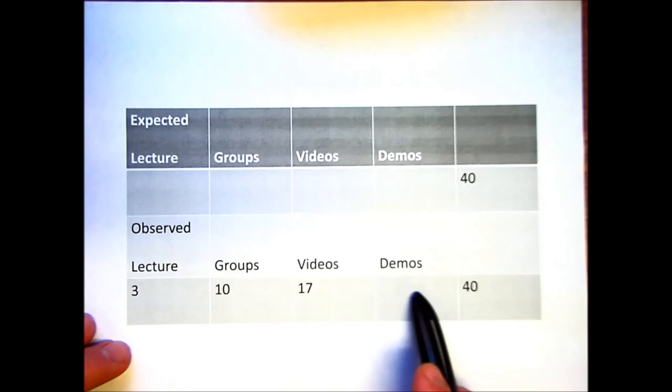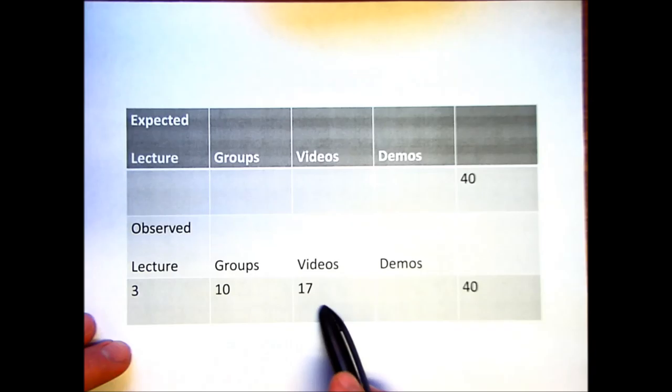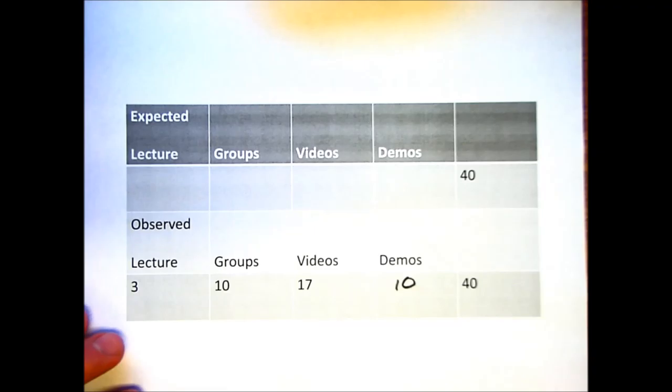Seventeen from the video. And you'll notice here then, what's left over, this is an example of the degrees of freedom. These three are free to vary. This last one's got to make it so it adds up to 40. And so this would be a ten as well. So this is our observed frequency. So just flat out what the 40 students in the class said.